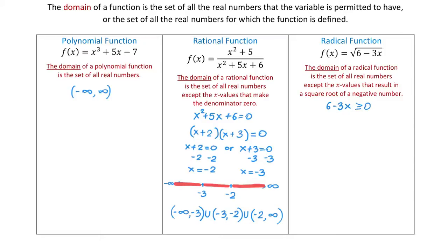Now we solve the inequality for x. Subtracting 6 from both sides gives negative 3x is greater than or equal to negative 6. Dividing both sides by negative 3 — and remembering that dividing by a negative flips the inequality symbol — gives x is less than or equal to 2. So the expression inside the radical will be greater than or equal to 0 when x is less than or equal to 2.